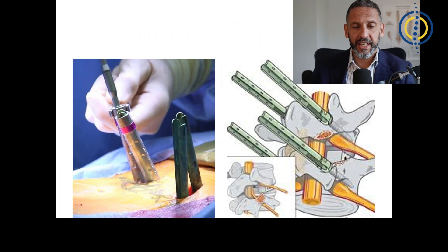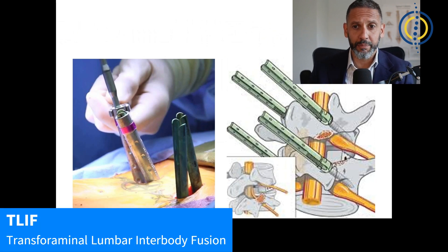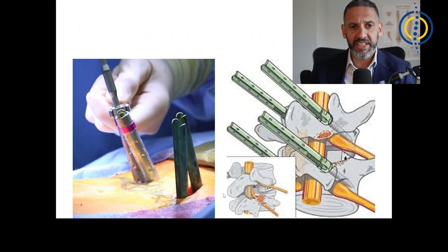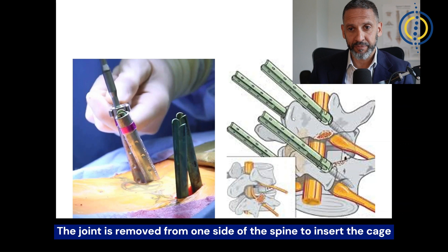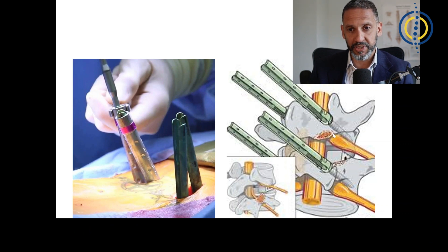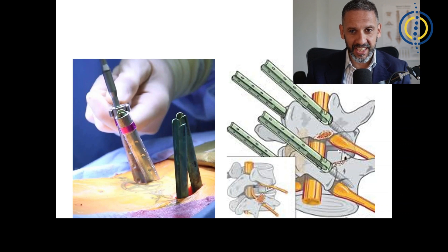Another common procedure is the TLIF — transforaminal lumbar interbody fusion. This has evolved into a minimally invasive technique through two very small incisions either side of the midline. We're just removing the joint either side, or usually just one side of the spine, and accessing the disc space through one side, through which we put in the cage, the breeze block. We have the same construct of four screws coming out through the skin that are then connected with rods and everything is then buried under the skin. It's a minimally invasive technique. One of the disadvantages is that the cage itself is a bit smaller, but nonetheless a good fusion can still be achieved with good results.